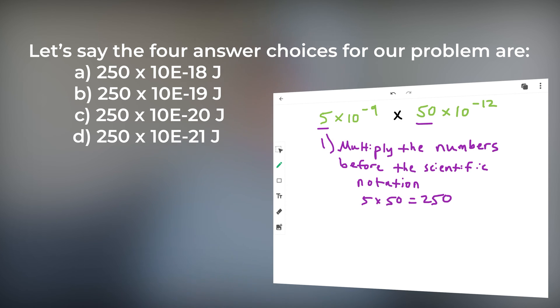Now we do care about the scientific notation. How do we multiply 5 times 10 to the negative 9th by 50 times 10 to the negative 12th? Use this tip. Think of solving the problem as a two-part process. First, multiply the numbers before the scientific notation. When we multiply 5 by 50, we get 250.